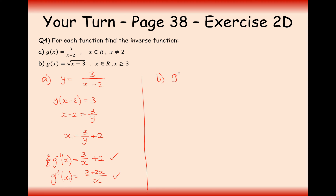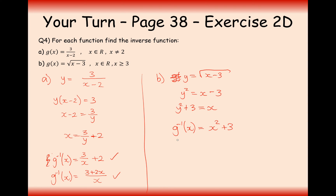For part b, g of x equals square root of x minus 3. We set up y equals square root of x minus 3 and rearrange to make x the subject: square both sides, add 3 onto the other side, giving x equals y squared plus 3. Writing the final answer with x's instead of y's, g inverse of x equals x squared plus 3.